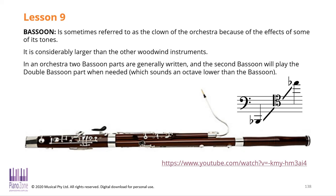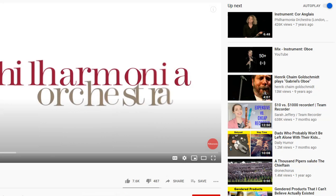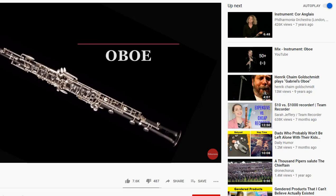And that's a bassoon — the reed is here on the mouthpiece. So let's look at each of these one at a time. The oboe is a C instrument and doesn't transpose.